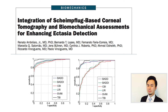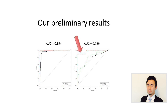A recent publication using the TBI in differentiating keratoconus from normal and also forme fruste keratoconus from normal shows on the left graph that TBI has a very high AUC for differentiating keratoconus from normal. The right-hand graph shows that TBI also has a very high AUC in differentiating forme fruste keratoconus from normal cornea, while CBI and BAD alone do not perform as well. Our preliminary results show similar findings — an AUC of 0.994 for keratoconus vs. normal, and an AUC of 0.969 for forme fruste keratoconus vs. normal.